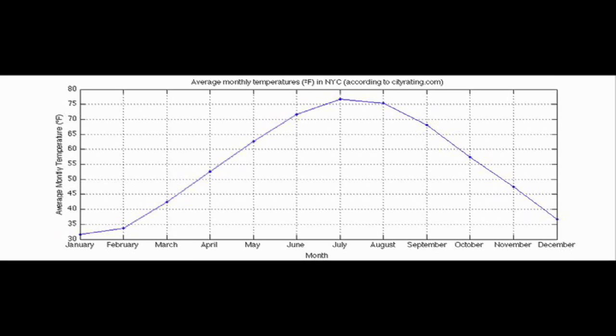On a graph, the domain is the property on the x-axis. Let's say you have a graph with temperature plotted over time. Time on the x-axis would be the domain of the graph.